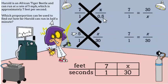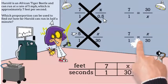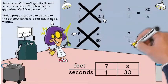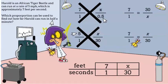We've narrowed it down to two answer choices and they use all of the same numbers. So which one is correct? That's right, it's the bottom one. The numerators have to stand for the same thing and the denominators have to stand for the same thing.